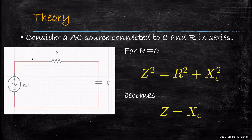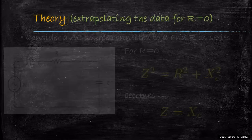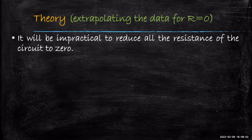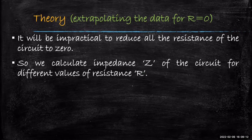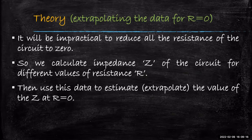Our aim is to take the CR circuit and make R equal to 0, then measure the current, find Z, and that Z equals Xc — that is our way of finding the value of C. However, it will be impractical to reduce all resistance to 0 because that would increase the current very high. So we will use an indirect method: calculate impedance Z for different values of R, then use that data to extrapolate the value of Z at R equal to 0.